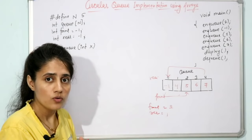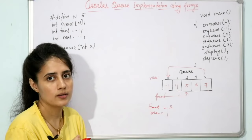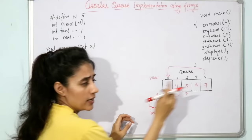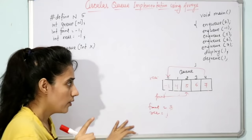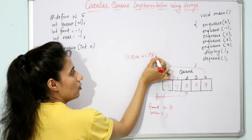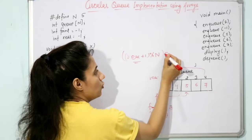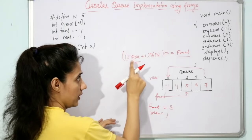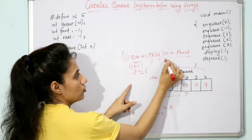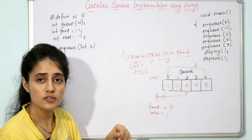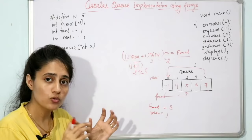Suppose we insert -1 at index 0, then 4 at index 1 — now rear is 1 and front is 2, and the queue is full. The old full condition rear == n-1 no longer works. The new full condition for circular queue is: (rear + 1) % n == front. Check: rear is 1, so 1+1=2, 2%5=2, and front is 2 — condition is true, queue is full.